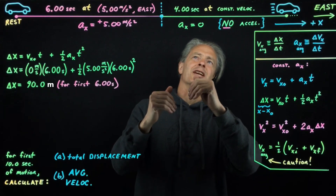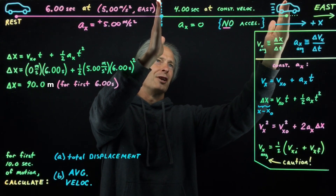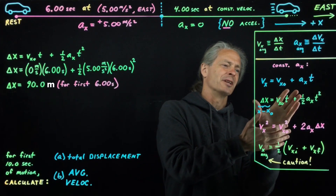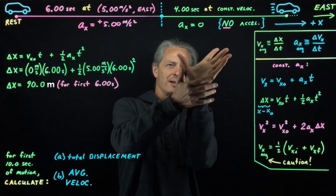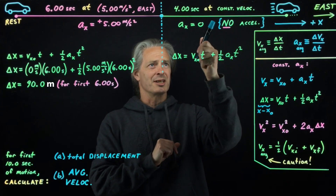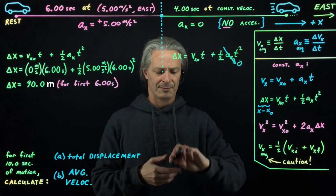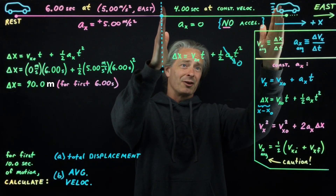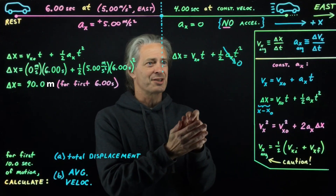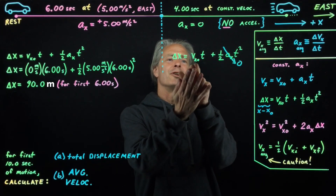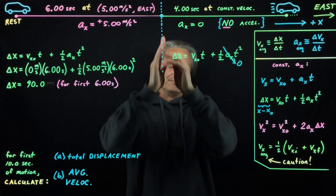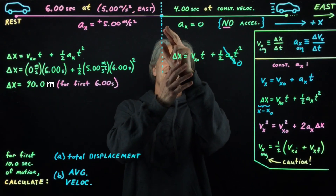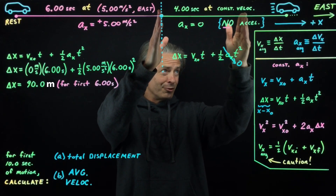Let's move on to the next segment of motion: the four seconds at constant velocity. Since we're looking to calculate a displacement in an amount of elapsed time, it makes sense to start with this equation. Constant velocity means zero acceleration, which kills off the acceleration term. So the displacement during this four-second segment of constant velocity will be equal to the duration of that segment, four seconds, multiplied by the velocity at the beginning of that segment. Since the velocity is constant for this segment, the velocity at the beginning will also be the velocity for the full duration of this segment.